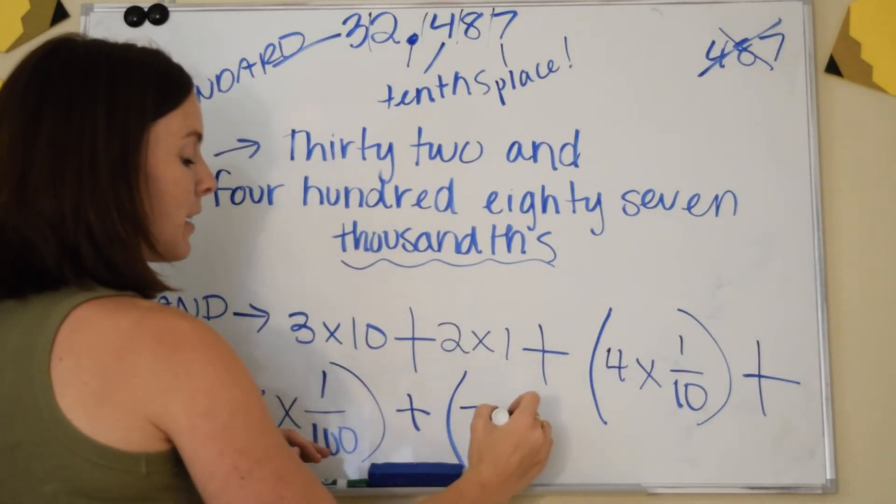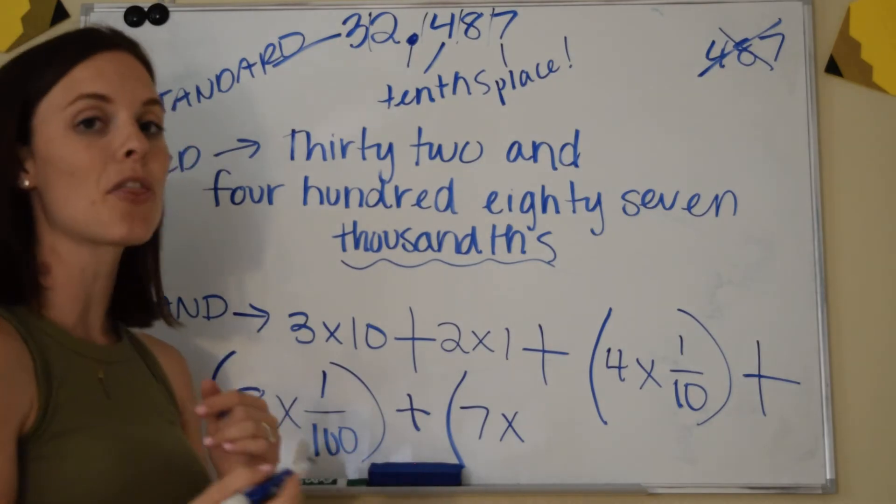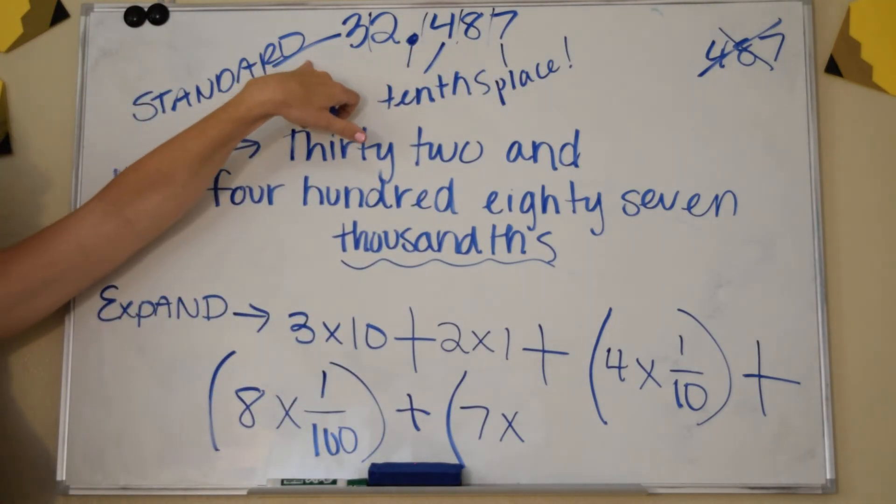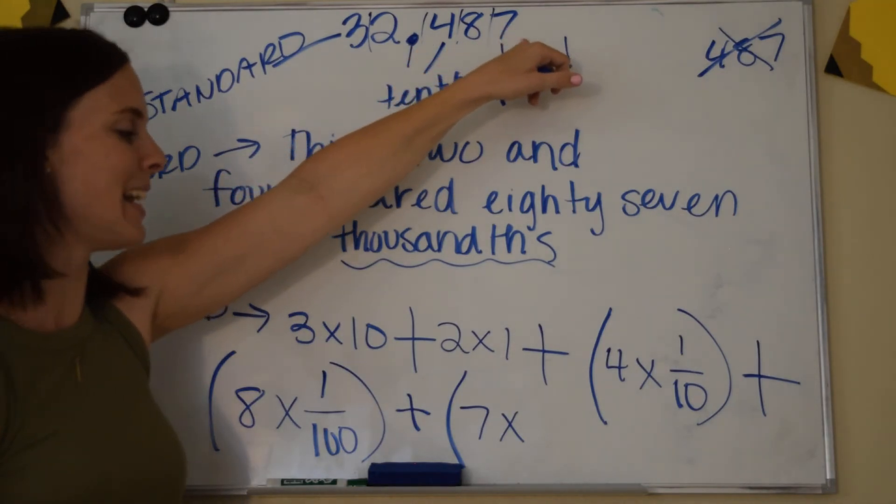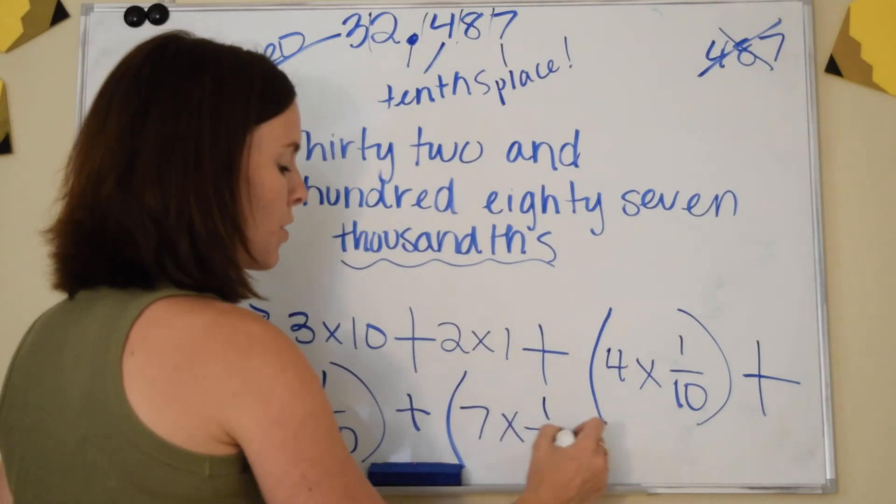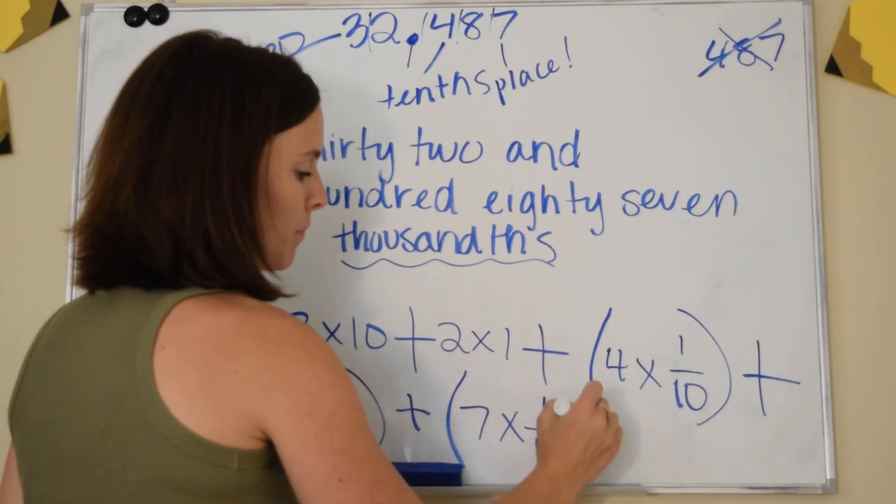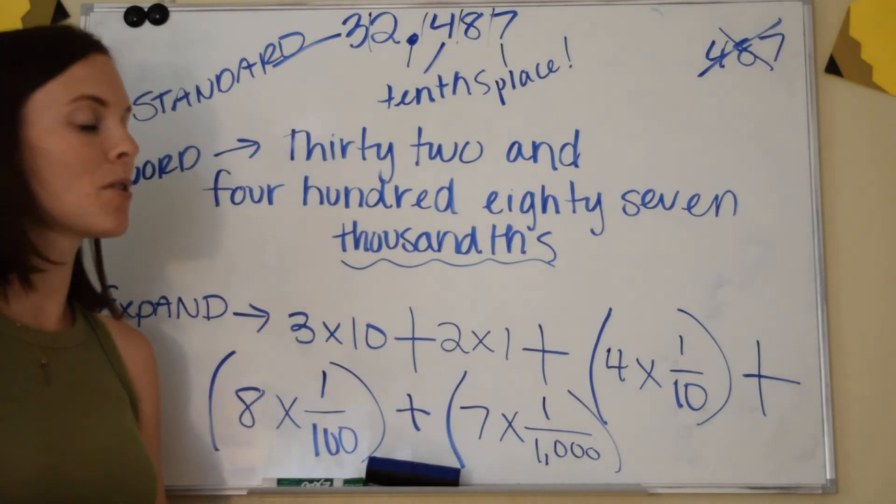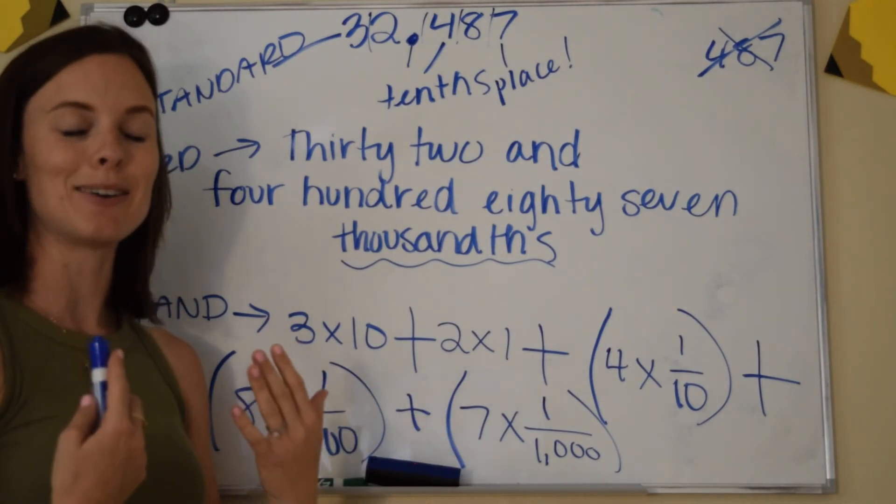My last digit is a seven. I multiply it by the place. It's in the thousandths. But it's not a thousand way over here. It's over here. It's tiny. It's 7 out of 1000. So we write it as a fraction, 1/1000. And that is how you do expanded form with a number that has digits up to the thousandths place.